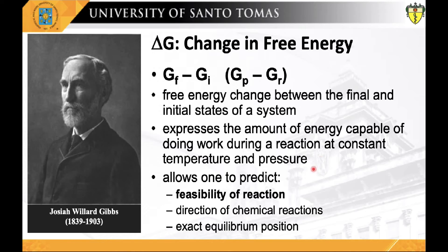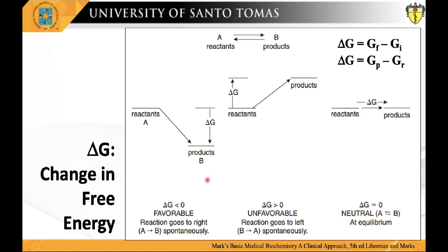Delta G expresses the amount of energy capable of doing work during a reaction at constant temperature and pressure. More importantly, it allows one to predict the feasibility of a reaction — the direction of a chemical reaction and the exact equilibrium position. In studying delta G, this important thermodynamic quantity reveals several key points: delta G represents free energy change at any point during transformation; its value determines the extent of the reaction and whether work is performed; and it represents the maximum amount of chemical energy potentially available for doing useful work. Any transformation may be described by comparing the physical and chemical properties of the initial and final states of a system.